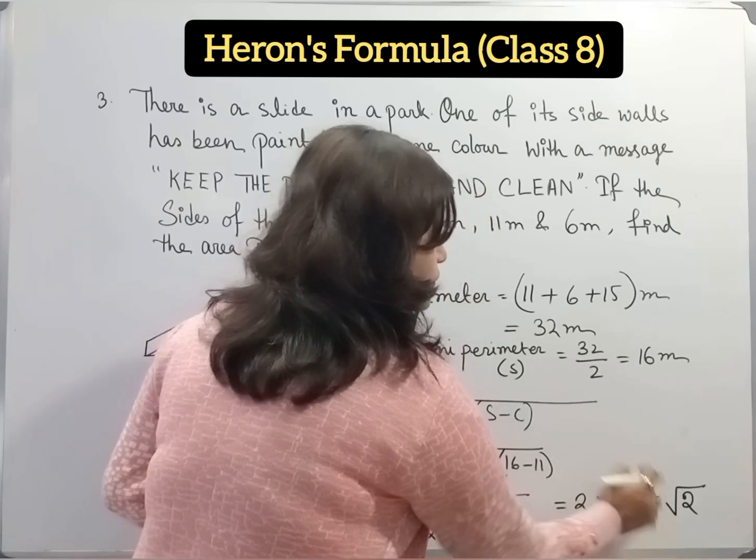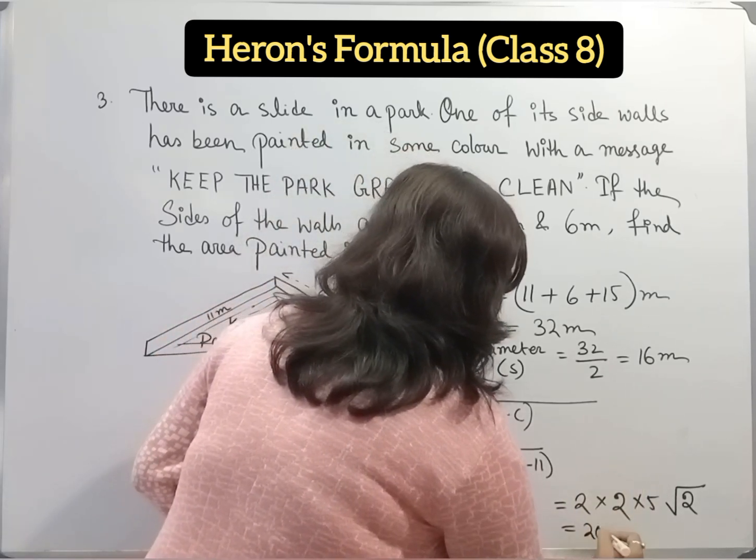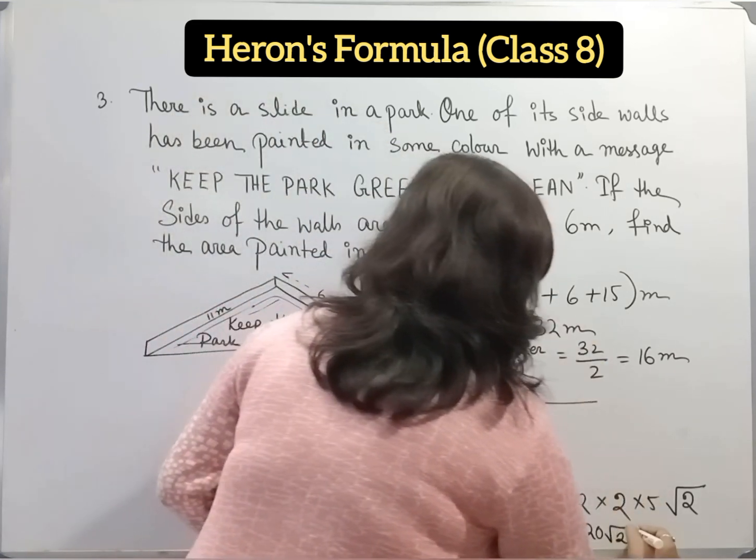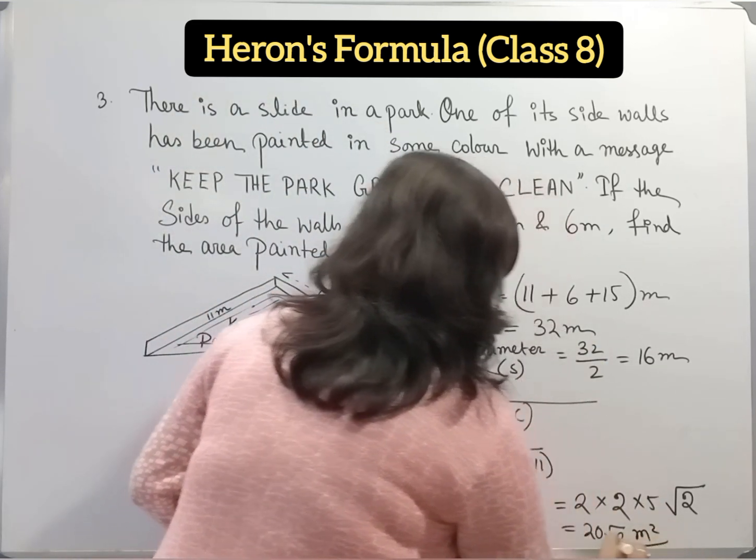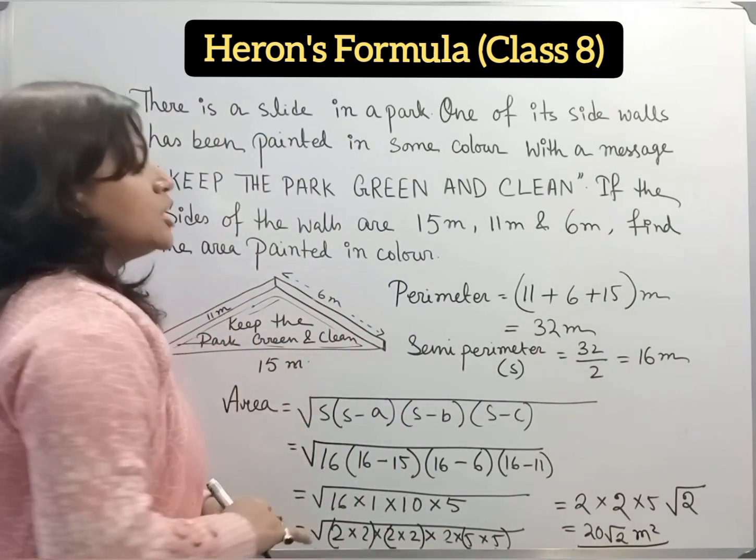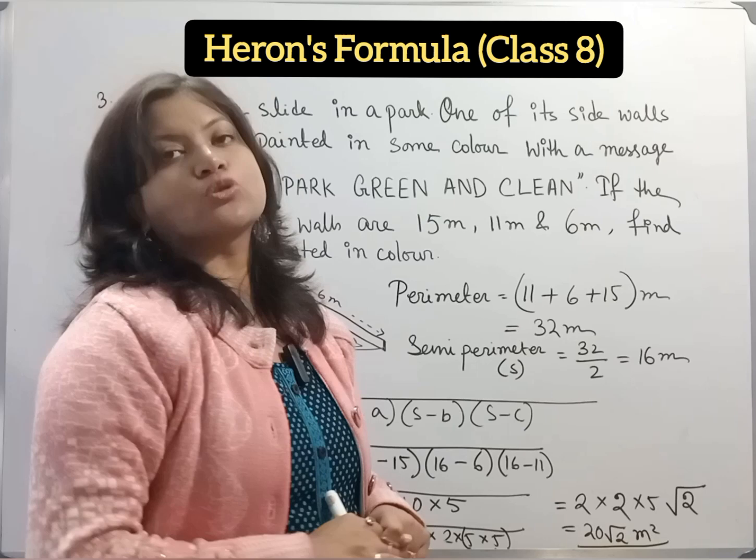Now 2, 2 is 4. 4, 5 is 20. So 20 root 2. And unit is square meter. This is the answer. So area of this painted portion is 20 root 2 square meter.